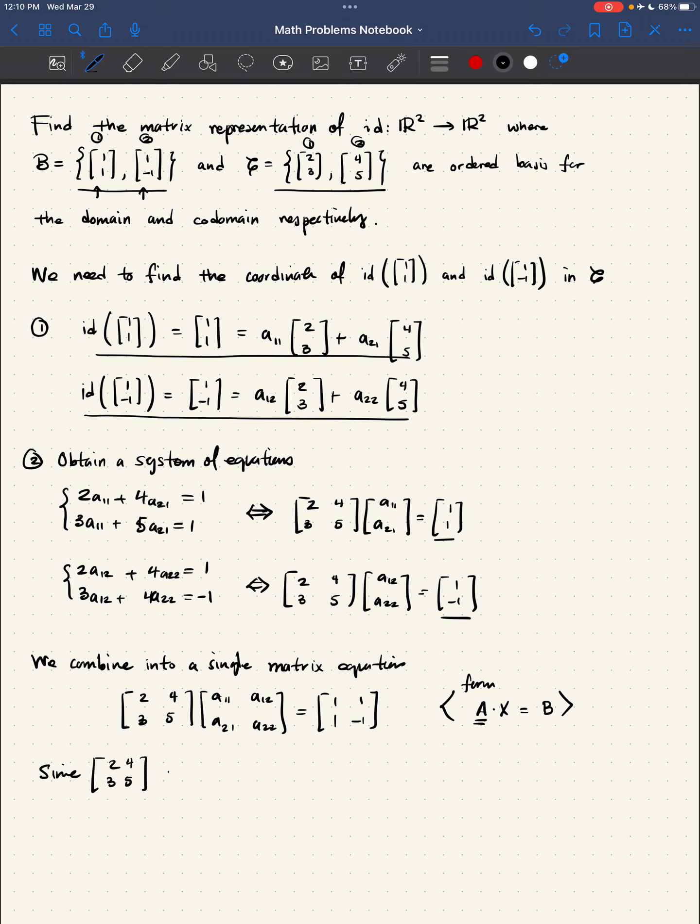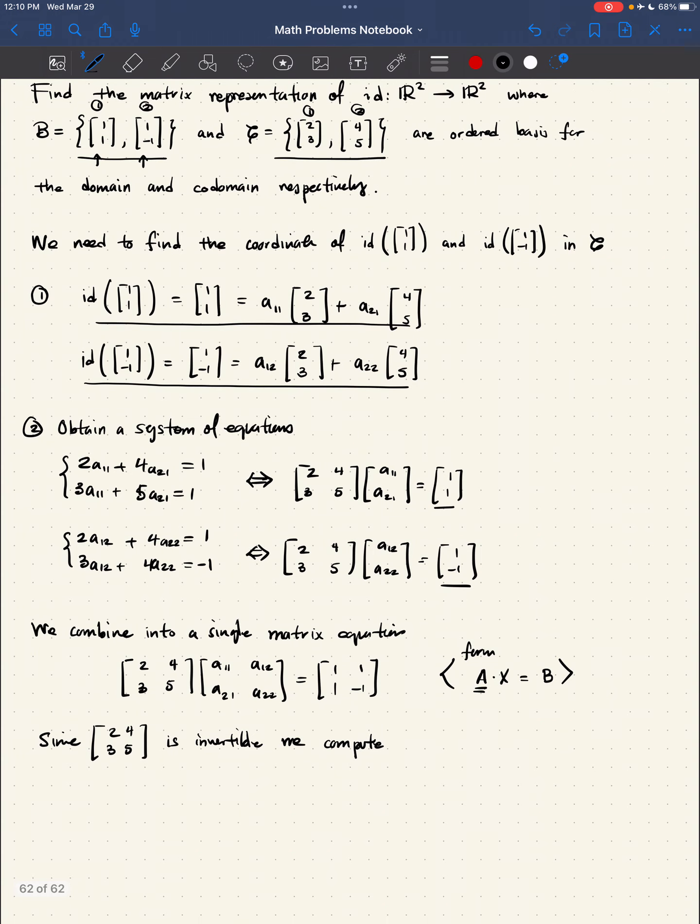Since [2,4; 3,5] is invertible, we compute just as follows: the inverse is equal to 1 over (2×5 - 4×3) times [5,-4; -3,2]. Here, I'm just applying the formula for the inverse of a 2 by 2 matrix, which now we can reduce to 1/2 times [-5,4; 3,-2].